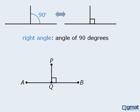If two lines or line segments intersect at a 90 degree angle, we say that they are perpendicular to one another.